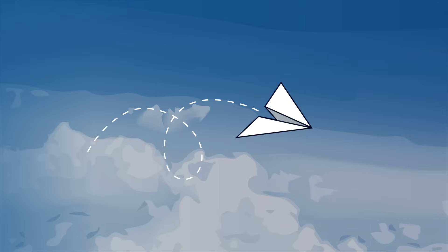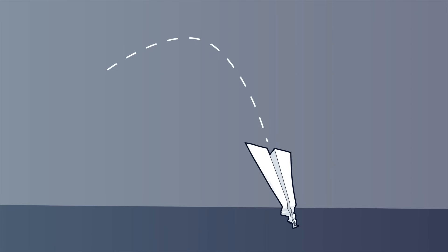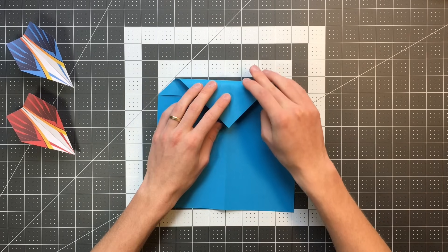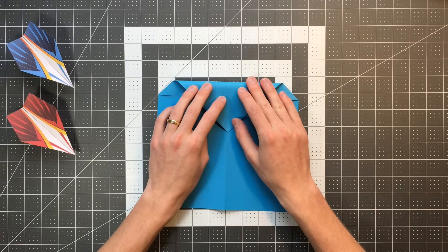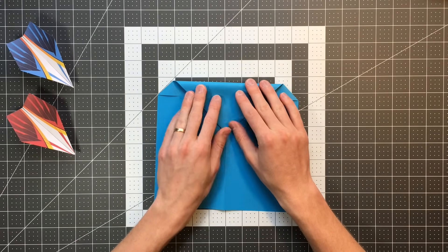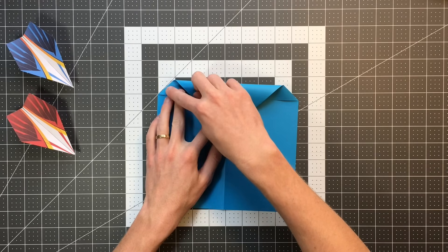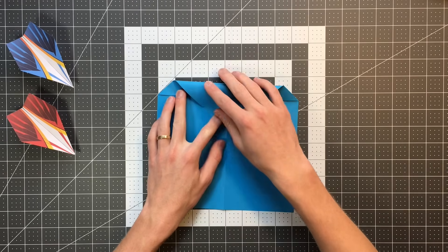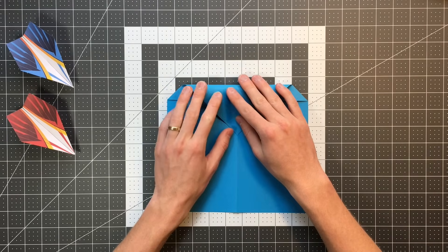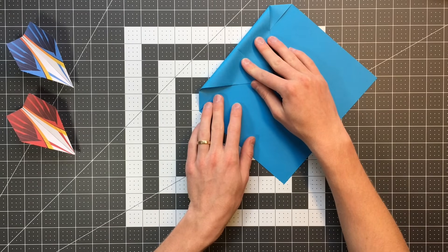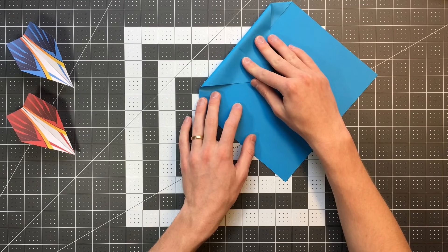Asymmetry can cause a plane to turn, spiral, dive, and crash in many different ways. You may need to refold your plane, being careful to make exact creases and maintain symmetry. But don't give up yet. Even if your plane is asymmetrical, there's still hope. The rest of this video should help you compensate for the differences between the two halves of the plane.